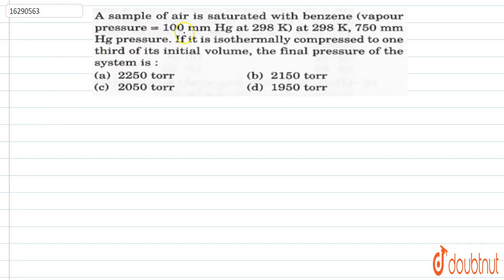A sample of air is saturated with benzene at 298 Kelvin, 750 mmHg pressure and within that, the vapor pressure is 100 mmHg. If it is isothermally compressed to one third of its initial volume, the final pressure of the system is: